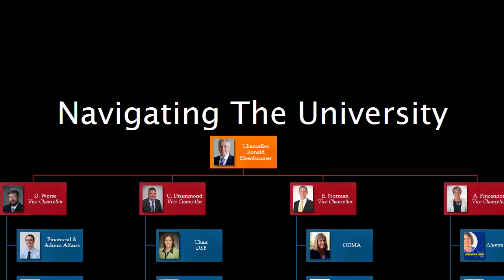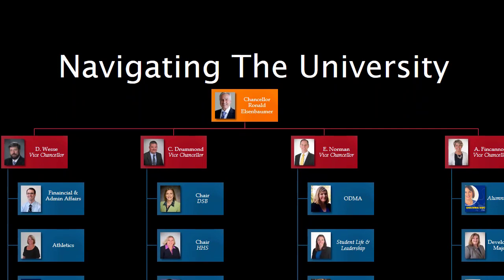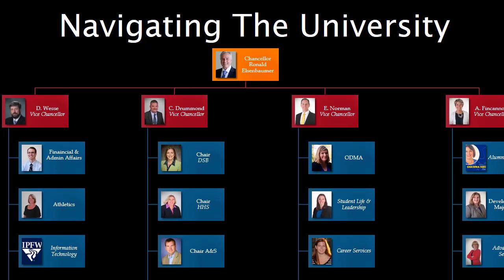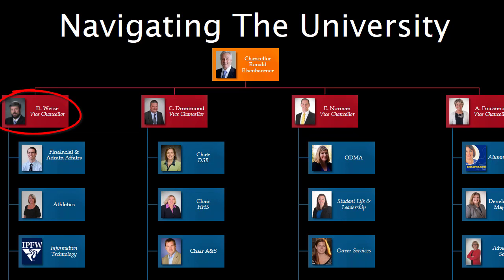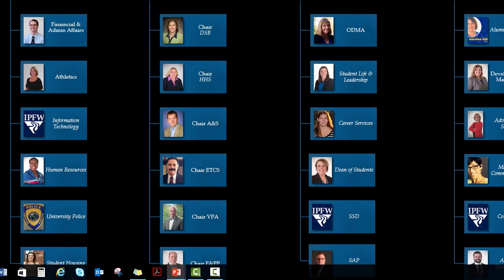The primary reason that the university exists is to educate, and so at the top role for academics is the Vice Chancellor for Academic Affairs, Dr. Carl Drummond. He oversees all of the different colleges and schools. There are three areas that exist as support to the primary role of education. The Vice Chancellor for Financial Affairs, David Wesse, oversees some offices that you may never deal with, such as Human Resources, Purchasing, and Accounting Services — offices that keep the university functioning. You will, however, have interactions with the Bursar's Office, who collects tuition, and possibly student housing if you live there.